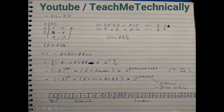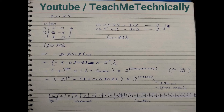We stop the iterations when either we get 1.0 as a result of multiplication, or the same numbers begin to repeat in subsequent iterations. Now we have converted 10.75 into binary. For the integer part we read 1010 normally, but for the fractional part we read from top to bottom, giving us 0.11. Combined, it becomes -1010.11.